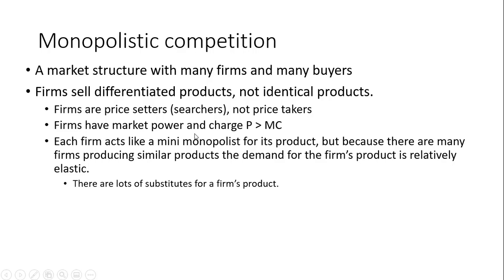Firms have market power and will charge a price that is greater than the marginal cost of production. Each firm acts like a mini-monopolist for its product, but because there are so many firms producing similar products, the demand for the firm's product is relatively elastic. So in this market structure, there are a lot of substitutes for a firm's product — they're not perfect substitutes, but nevertheless, there are many substitutes available.